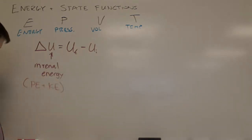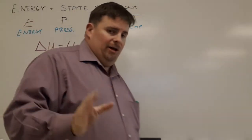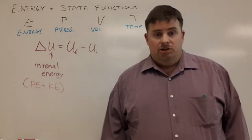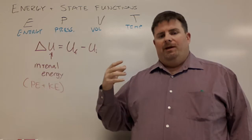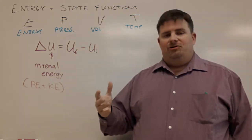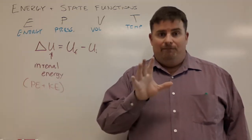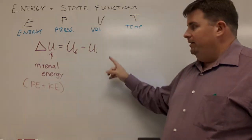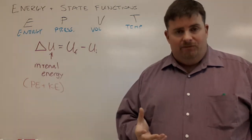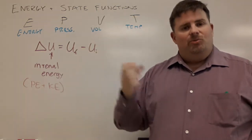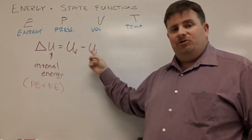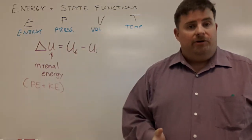The symbol delta is ubiquitous throughout chemistry. Delta means change — a change in the function that's happening. When we talk about a change, we're always talking about products versus reactants. It's perfectly okay to have negative values here because they have meaning: if the final products have more energy than the initial reactants, delta U is positive, meaning the internal energy of the system has increased and absorbed energy.